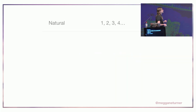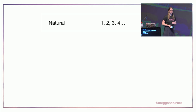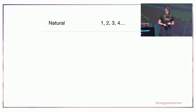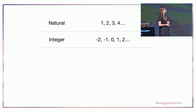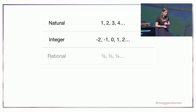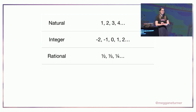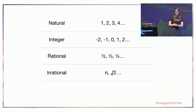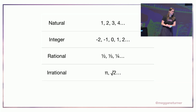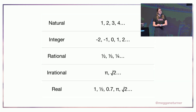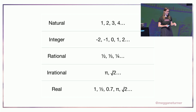We can start off with our natural numbers, which are our positive whole numbers. We have integers, which are negative and positive whole numbers, and include zero. We have rational numbers, which are numbers that can be expressed as fractions. Irrational numbers are numbers which cannot be expressed as fractions, such as pi or the square root of two. And we also have real numbers — a superset of all of the above categories, representing any number you can see on the number line.